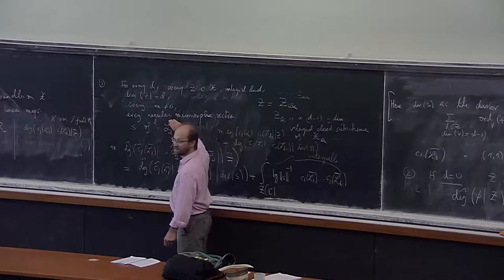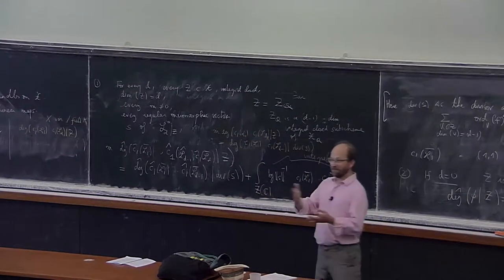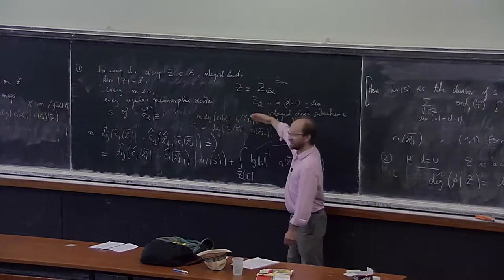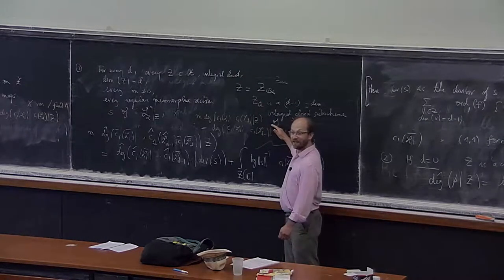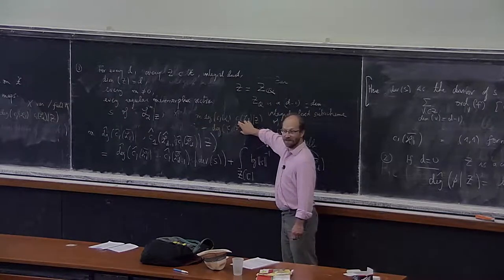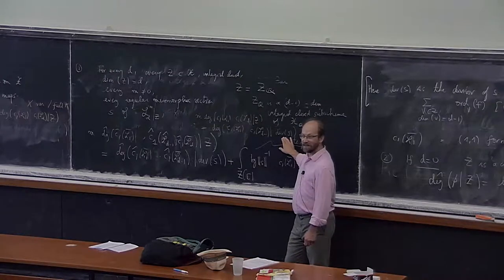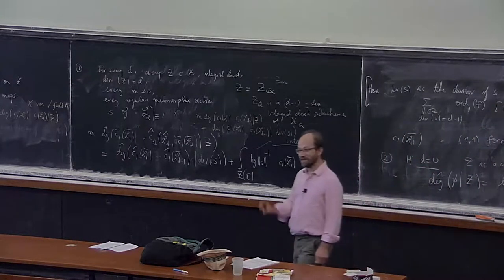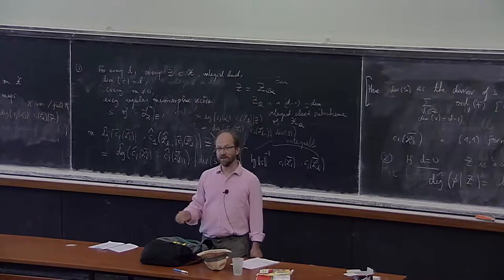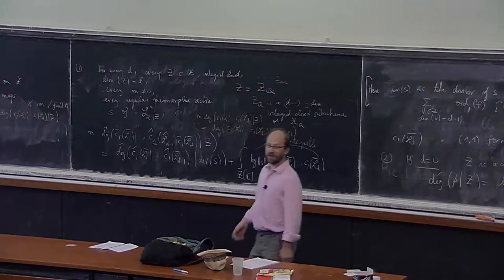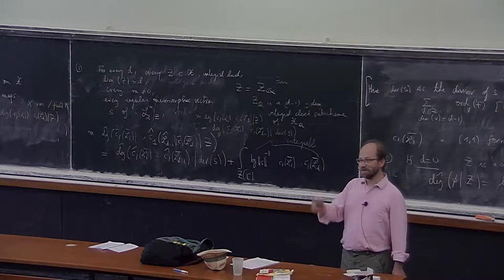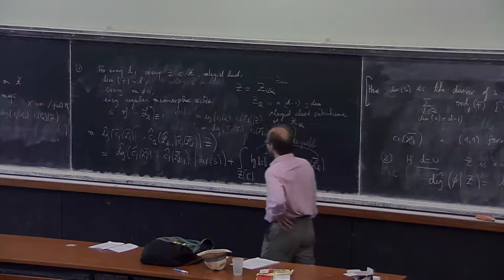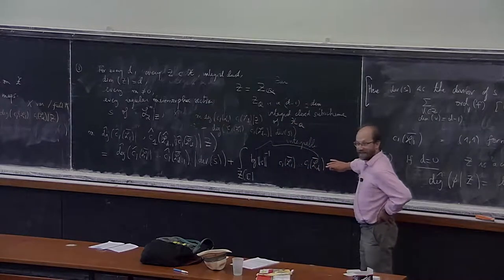The idea is to take hyperplane sections of Z governed by the last line bundle, get the divisor, and continue. In dimension zero, you count points according to their degrees — if the field is algebraically closed it's just 1, but if your ground field is Q, you count the point sqrt(2) with multiplicity 2. Here in number theory, for heights, the situation is slightly more complicated: if I forget the complex integral term, I get a definition that doesn't work. I need that term for the theorem to hold.